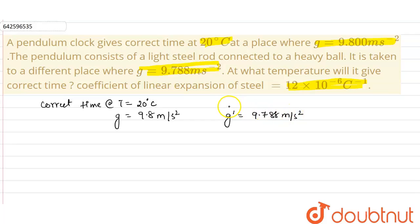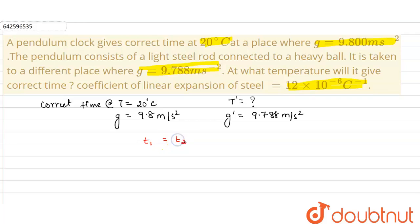We have been asked: at what temperature in the new place will the clock give correct time? The condition is that the time period at the first place will be equal to the time period at the second place. The time period for a pendulum clock is given as T = 2π√(l/g), where l is the length of the pendulum.